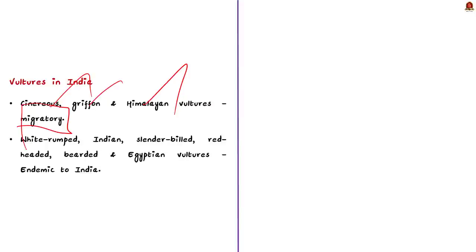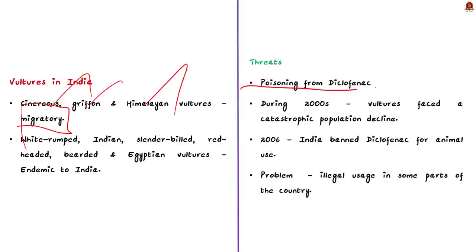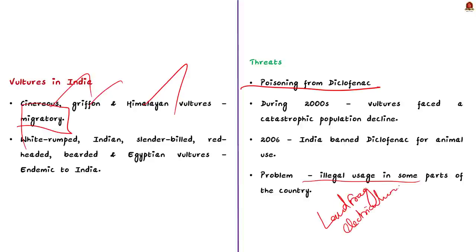The foremost threat to vultures is poisoning from diclofenac — an anti-inflammatory drug used as a painkiller for cattle. When vultures eat the carcasses of cattle treated with diclofenac, it causes kidney failure. Due to this diclofenac poisoning, vultures faced a catastrophic population decline during the 2000s. India banned diclofenac for animal use in 2006, but it is still used illegally in some parts of the country. Other threats include land fragmentation, habitat loss due to human activities, and electrocution from collision with power lines.